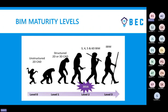Level 3 BIM is AI-based and fully integrated — it's not limited to the construction industry alone. It extends into advanced IT technologies such as AI, machine learning, IoT, big data, and data analysis, all of which can be linked and integrated with your BIM model.